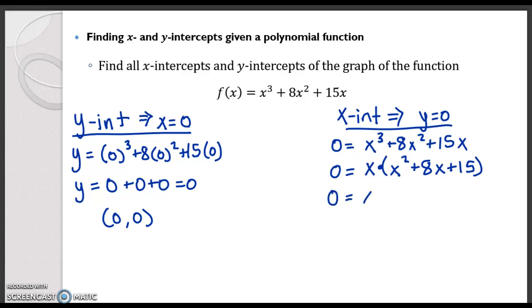So 0 equals x times, and 15 is 5 times 3, and then 5 and 3 add up to be 8. So this factors into x plus 3 times x plus 5. So I'm factored completely. The x plus 3 is prime, the x plus 5 is prime.